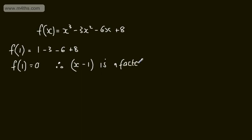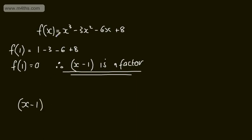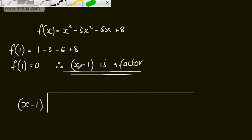At this stage we could keep going to find more linear factors by trying f(minus 1), f(2), f(minus 2), f(4), f(minus 4), f(8), and f(minus 8). However, I think it's easier at this point to either equate coefficients or use polynomial long division. So let's go ahead and use polynomial long division to divide the cubic by the linear factor, giving us a quadratic which we can then attempt to factor into two linear factors.